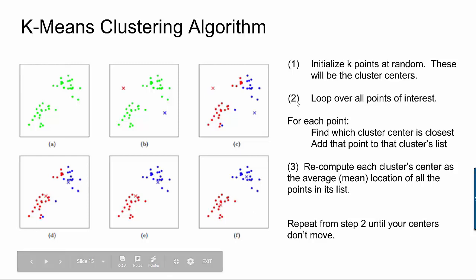If I was going to repeat this same set of steps again, when I loop over all the points of interest and I find which clusters they should be assigned to, you'll notice that nothing's going to change. Like all the blue points are going to remain as blue points and all the red points are going to remain as red points.